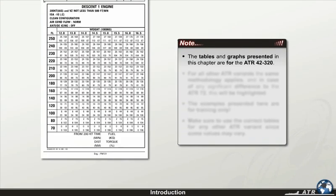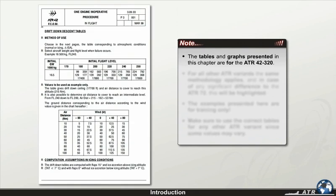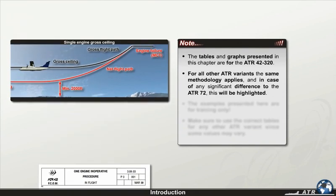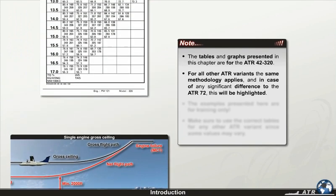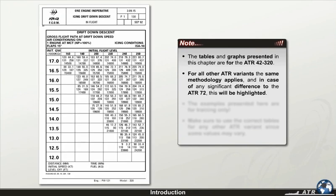Note that the tables and graphs presented in this chapter are for the ATR 42-320. For all other ATR variants, the same methodology applies, and in case of any significant difference to the ATR 72, this will be highlighted.